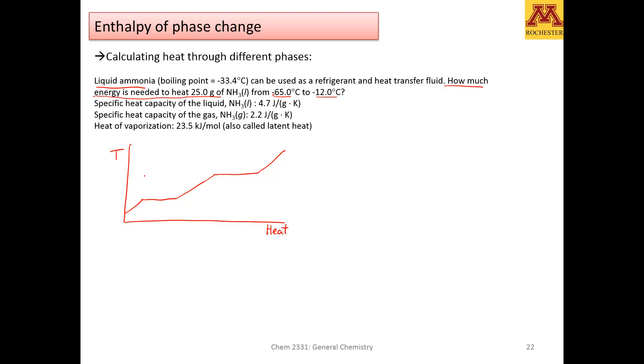When you have a slope, when the temperature changes when you give heat, it means that you have a heat capacity. So remember, when you have a relationship between heat and temperature, it means that you have a pure phase.